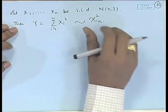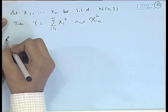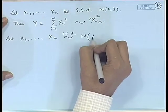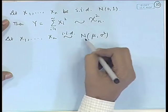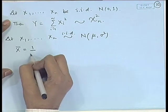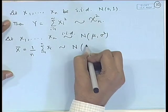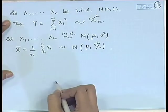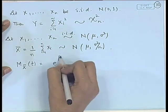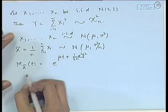We will consider a further elaborate description of chi-square in the next section. Now let X₁, X₂, ..., X_n be a random sample from N(μ, σ²). In place of N(0,1), let us now consider N(μ, σ²). If we define x̄ as the sample mean, then by the linearity property this follows N(μ, σ²/n), and the moment generating function of x̄ is e^(μt + ½ σ² t²/n).